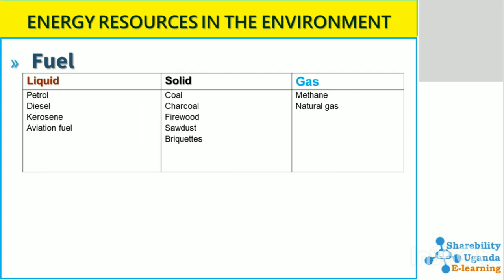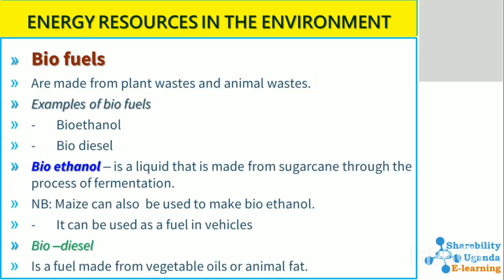Energy resources from plants: we get wood fuel, biogas, food, and more. There is also a reference table here of different energy sources from different states of matter — liquid, solid, and gas — which you can pause the video to review. Biofuels are made from plant wastes and animal wastes; examples include bioethanol and biodiesel.